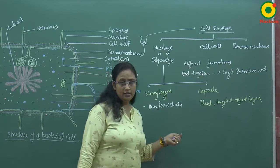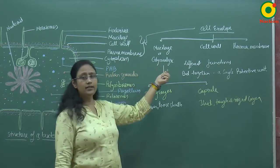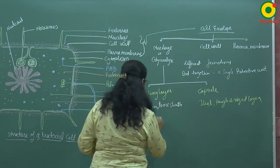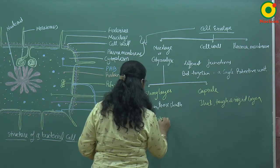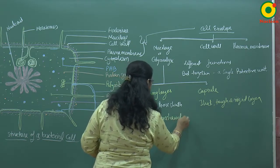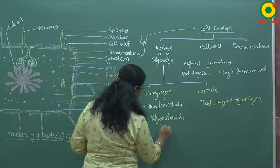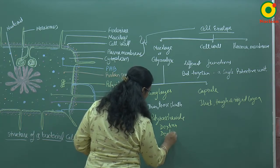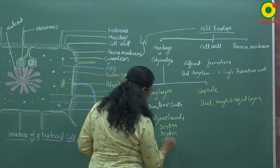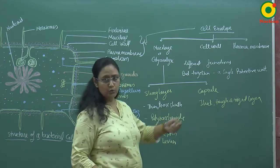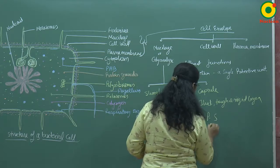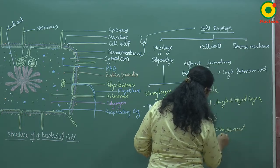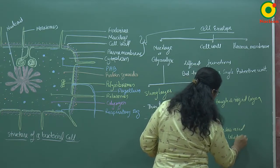The slimy layer and glycocalyx are chemically made up of polysaccharides. The forms of polysaccharides present are dextrin and levan. In case of the capsule, it is also made up of polysaccharides, but a few amino acids are also present, like D-glutamic acid.